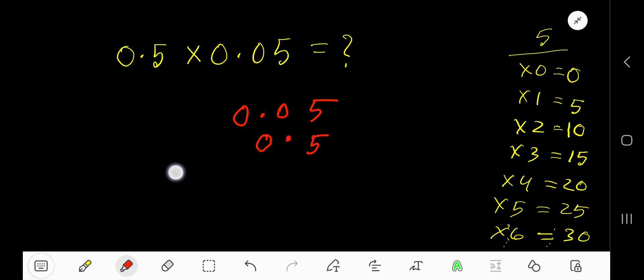Now multiply: 5 times 5 equals 25. Now think there is no decimal here. 5 times 5 is 25, write 5, carry 2 to the next column. 5 times 0 is 0, 0 plus 2 is 2.